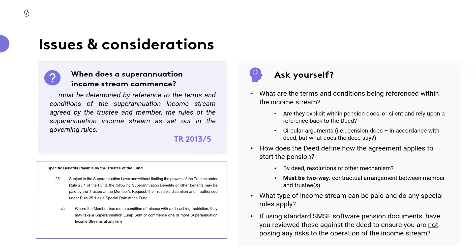Are these terms and conditions explicit within the pension documents, or are they silent and therefore require a referencing back to the deed? What we commonly see with SMSF pension documents out of software is that they are quite light on in terms of many of those requirements. We end up in a circular argument — the pension docs say they're done in accordance with the deed, but the deed basically says they're done in accordance with the superannuation laws. So how does the deed define how the agreement applies to start the pension — is it by deed, resolution, or other mechanism?